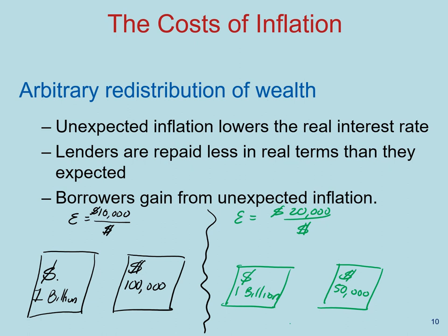My parents still had a claim on an asset worth more than their mortgage, but their mortgage had been halved in nominal terms. Lenders and anyone else in Ecuador who owned financial assets denominated in sucres lost half of their wealth, while all borrowers were forgiven half of their debt. As you can see, unexpected inflation can have significant effects on the distribution of wealth.